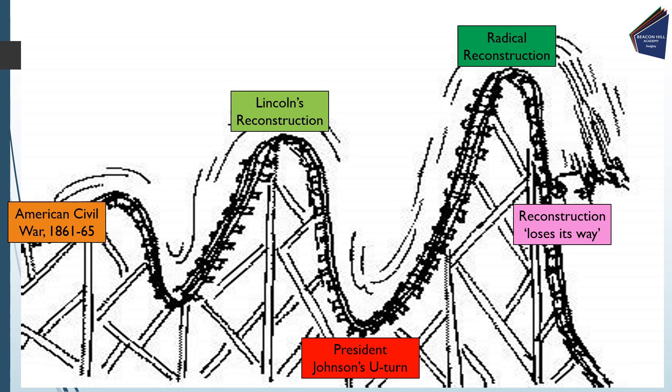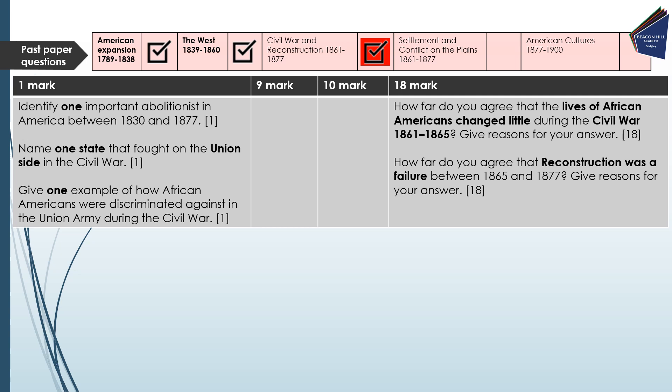That is the roller coaster of Reconstruction, and you need to know the ups and downs with some examples of policies along the way. Here you have a number of past paper questions from the third time period, 1861 to 1877. Have a go at some of these as part of your revision — there have been no 9 or 10 mark questions on this theme so far, so think about what the exam board could ask for a 9 or 10 mark question. The next video in this series will be on the third time period's second topic: Settlement and Conflict on the Plains, 1861 to 1877.